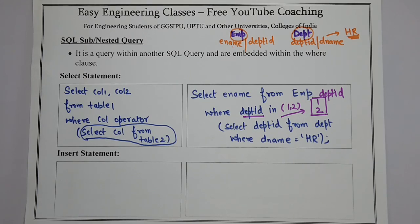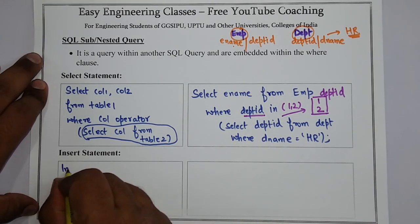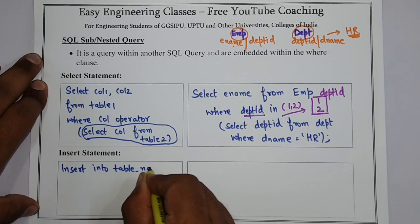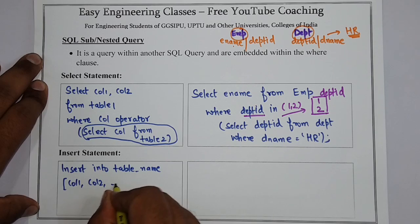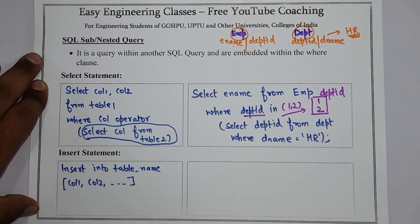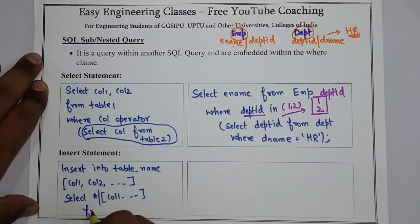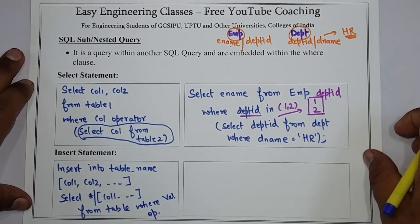Next is INSERT. The syntax for INSERT using a subquery is: INSERT INTO table_name (column1, column2) SELECT star or columns FROM table WHERE value operator (nested query). It will be more clear with the example.